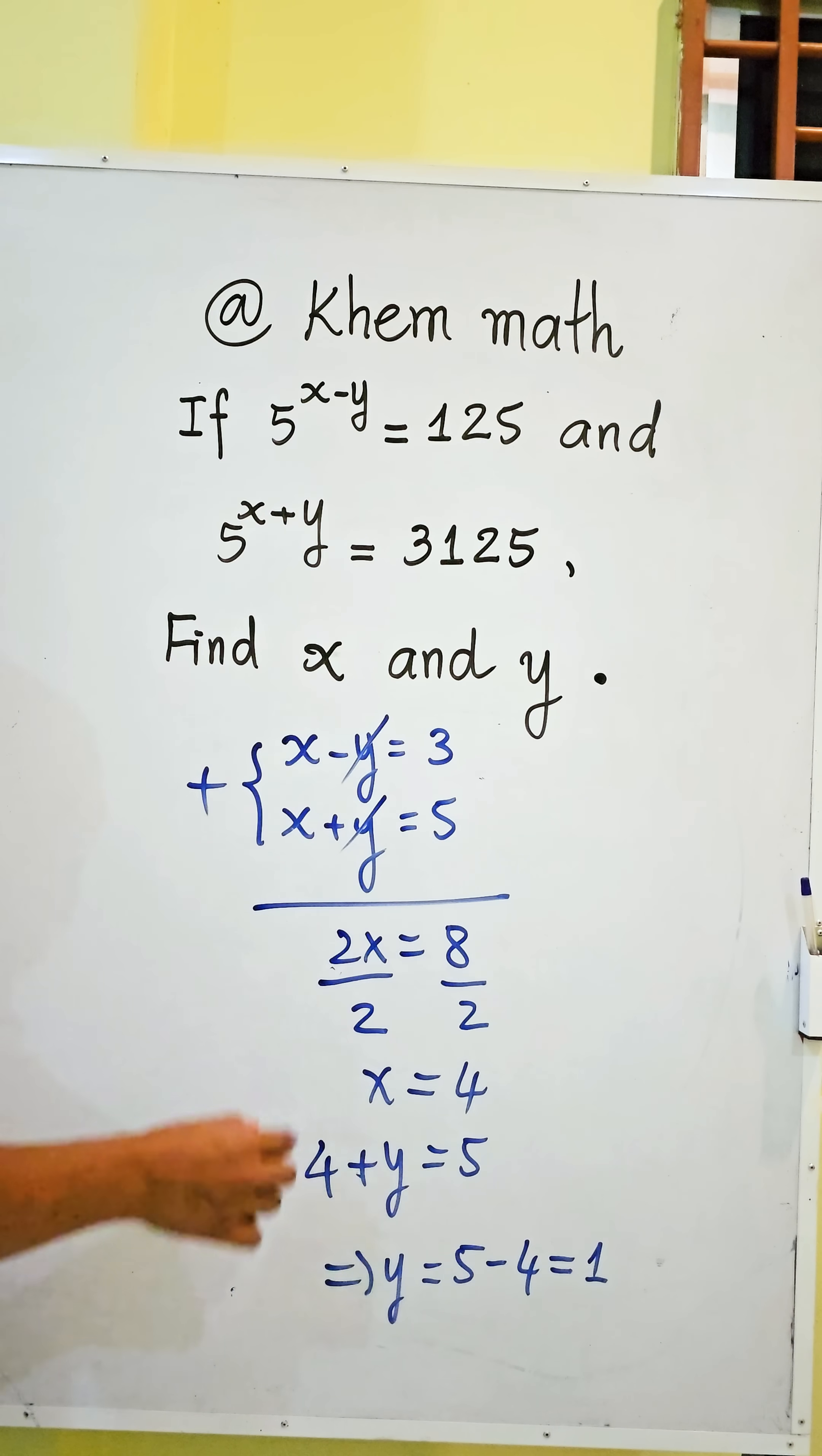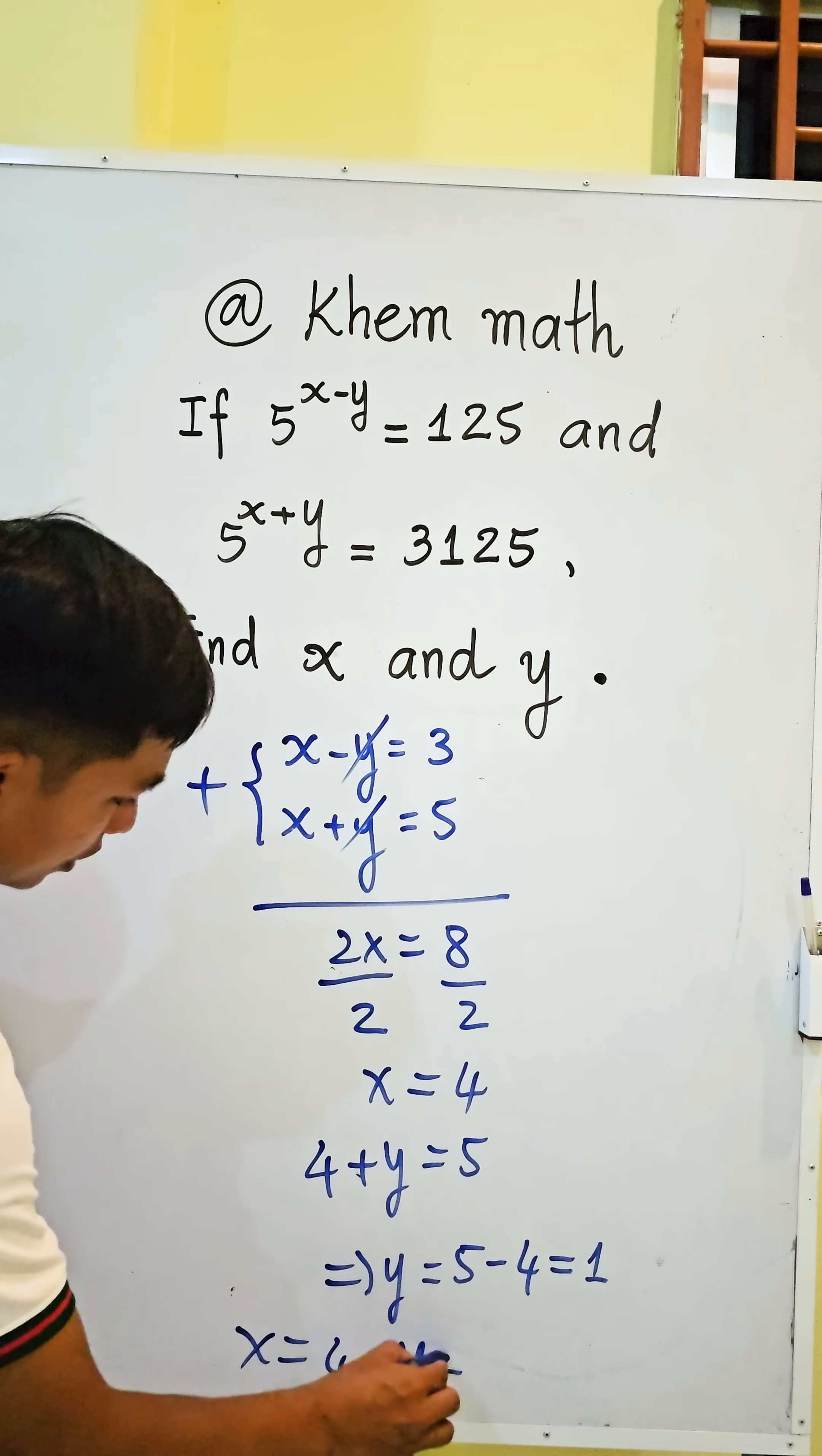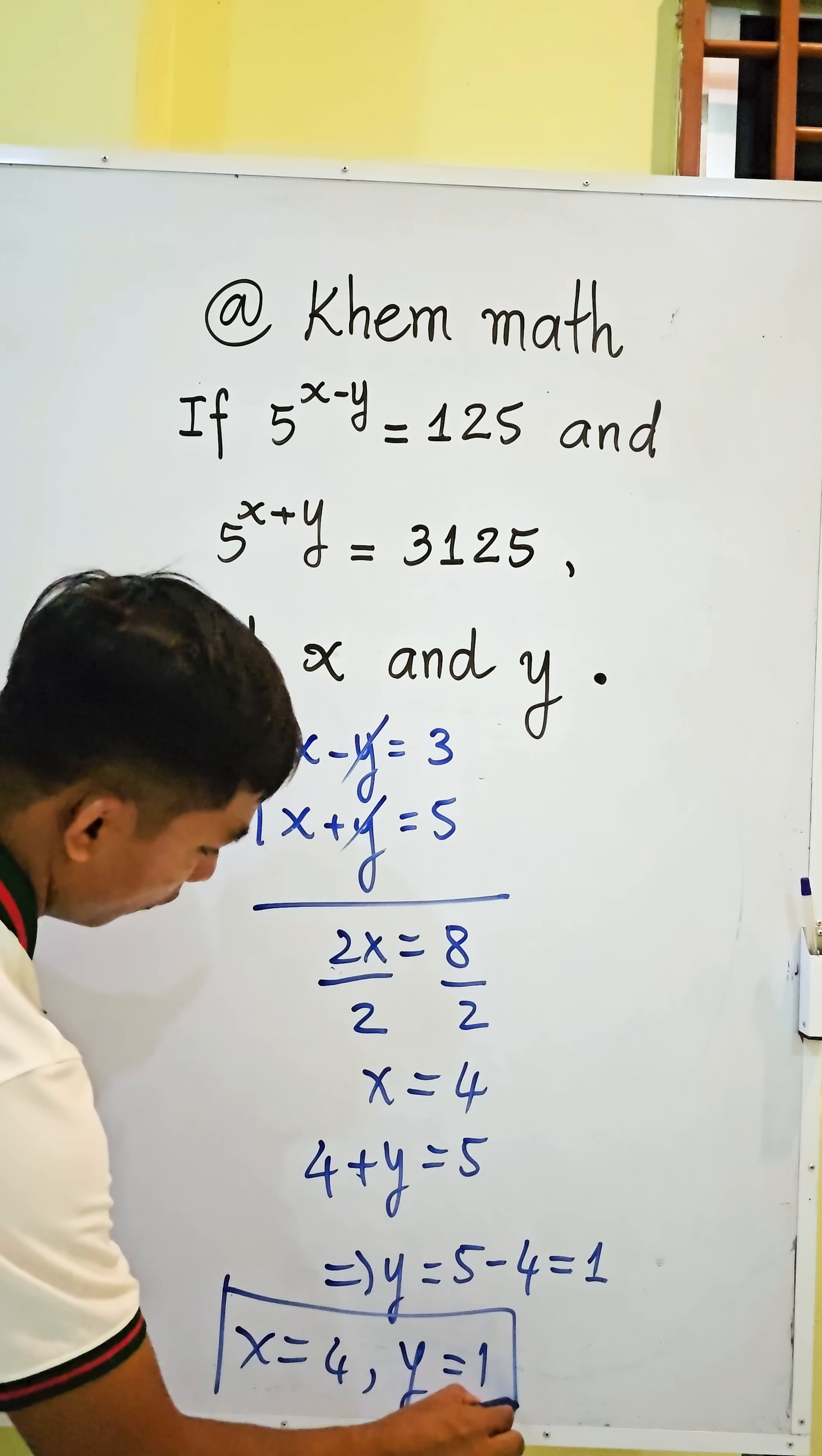And we get y equals 5 minus 4, which equals 1. So x equals 4 and y equals 1 is our answer.